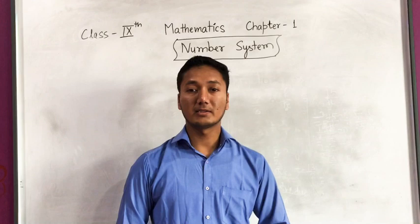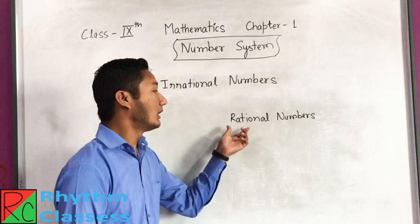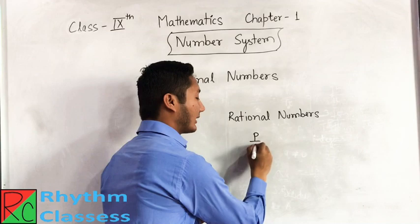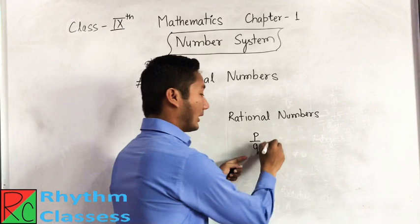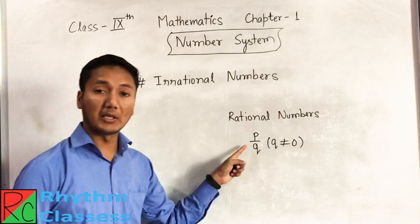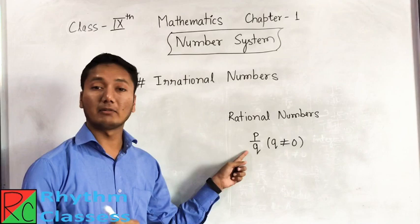In the last episode we have seen what rational numbers are. What are rational numbers? Any number which can be written in the form of P by Q, where P and Q both are integers but Q is not equal to 0. P and Q are integers — negative or positive — and Q should not be equal to 0. So these numbers are rational numbers.